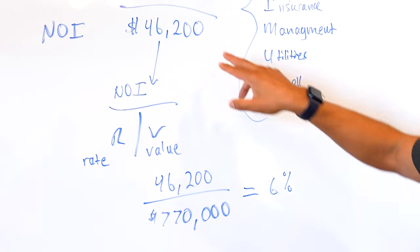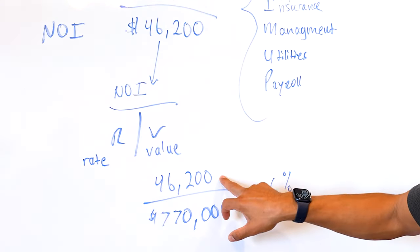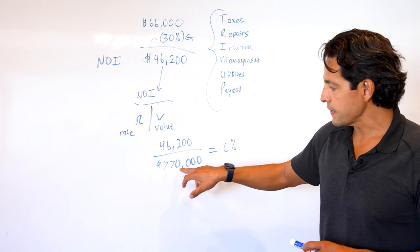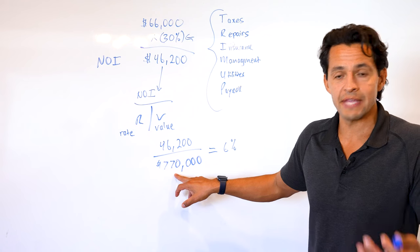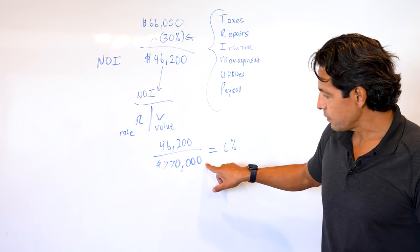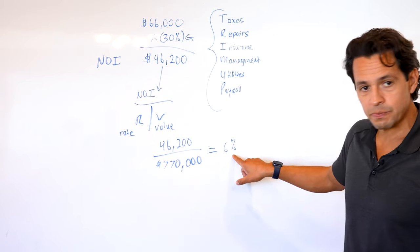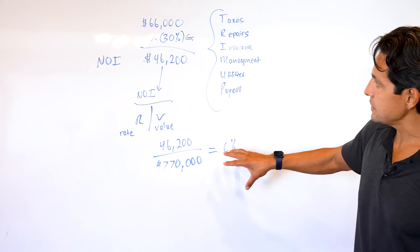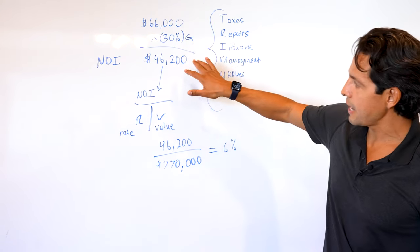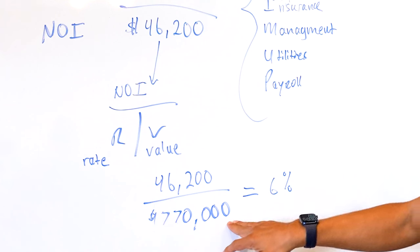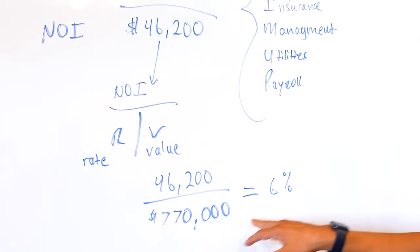Using this example, we have a $46,200 NOI. And in this case, I'm just making the assumption that the property was worth $770,000. I make some simple division and I come up with a 6% cap rate. So you could see how we took this one property, took out the operational expense, came up with the net operating income, divided it by the market value, and we came up with a cap rate.